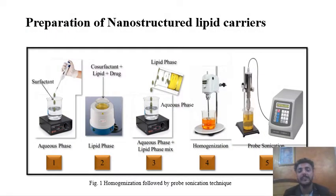Now, preparation of NLCs. In my screen you are seeing 5 steps. In first step, we are taking aqueous phase in a beaker on a magnetic stirrer, then adding surfactant in that. In the second step, we are taking co-surfactant and lipids and heating that lipid and co-surfactant above their melting points, then adding the drug. In the third step, we are adding lipid phase in the aqueous phase slowly.